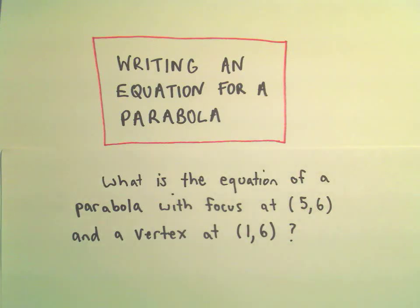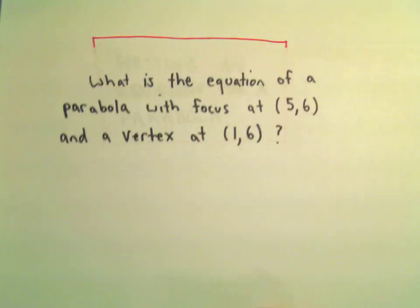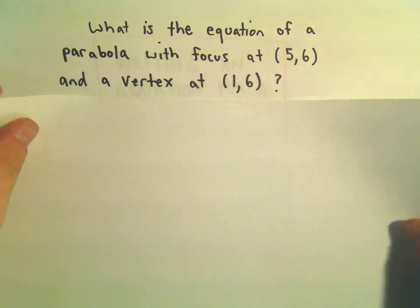Alright, so another example here for finding the equation of a parabola, in this case with a focus of 5, 6 and a vertex at 1, 6.